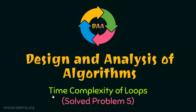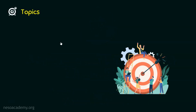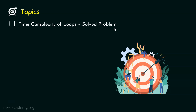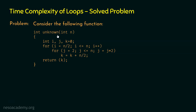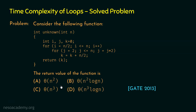Let's discuss Problem No. 5 on Time Complexity of Loops — the topic is Time Complexity of Loops Solved Problem. Here is the problem: consider the following function. The return value of the function is theta of n square, theta of n square log n, theta of n cube, or theta of n cube log n. We need to determine the return value of this function unknown, which is k, and find its asymptotic value in theta notation.